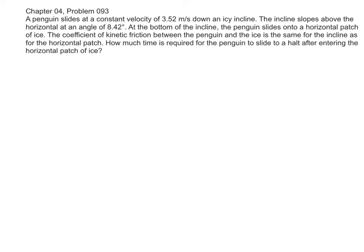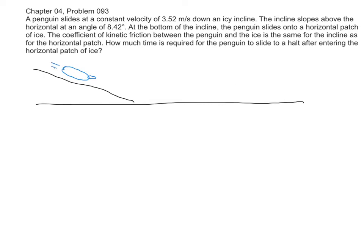Let's look at what we have going on here, what we're given, and what we're trying to find. We're told that there's this ramp or snowbank, and we have a penguin who's sliding down here. He's cruising down the slope, and we're told that he's moving with a constant velocity — V is constant — at 3.52 meters per second.